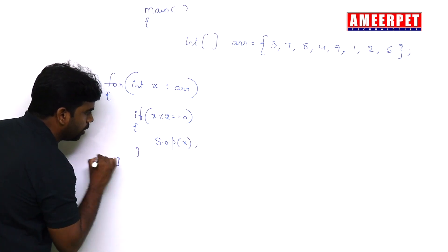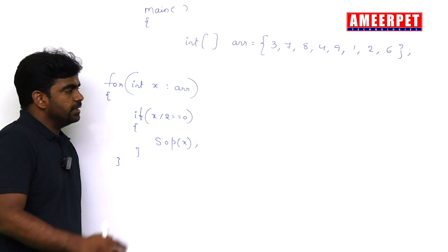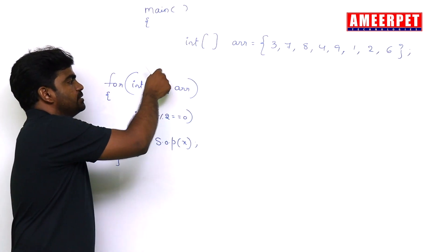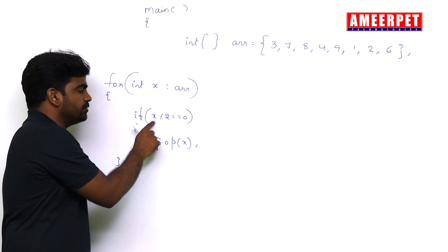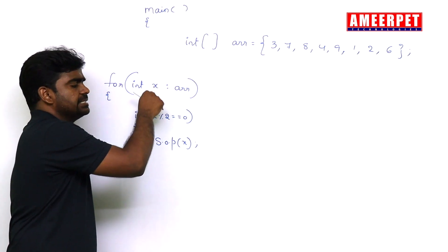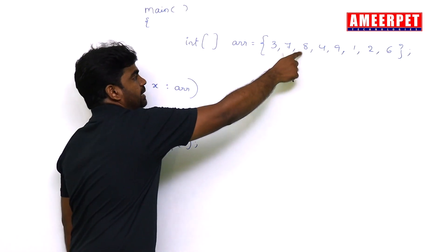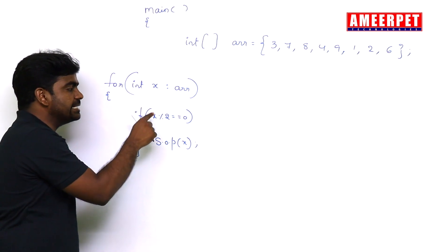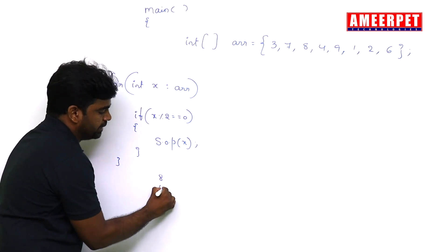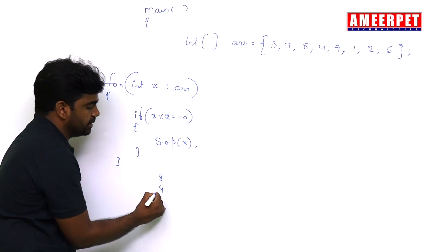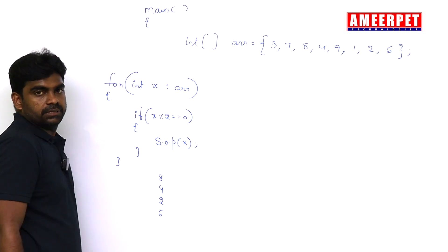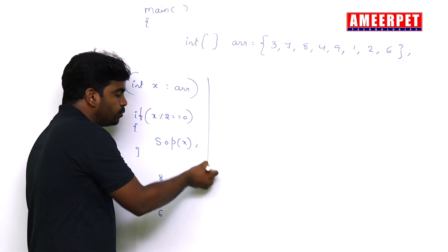So it will print all even numbers from the array. Each element will come. First three, then it will check if three is divisible by two, no, so it will not print. Next seven will come, not divisible, will not print. Next eight, yes it is divisible, so we'll print eight. Next four divisible, nine is not divisible, two is divisible, six is divisible. So printing all even numbers.